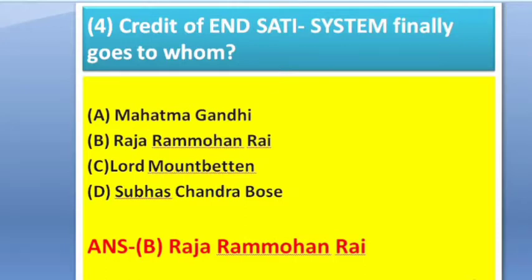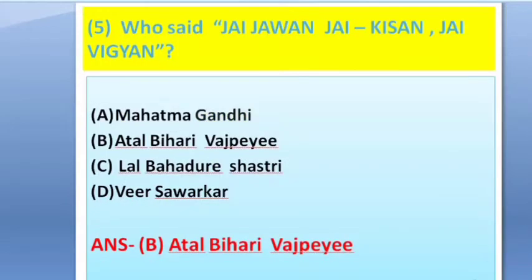Next question: Who said 'Jai Jawan, Jai Kisan, Jai Vigyan'? Options: A — Mahatma Gandhi, B — Atal Bihari Vajpayee, C — Lal Bahadur Shastri, D — Veer Savarkar. The answer is option B — Atal Bihari Vajpayee. This is a most important question.